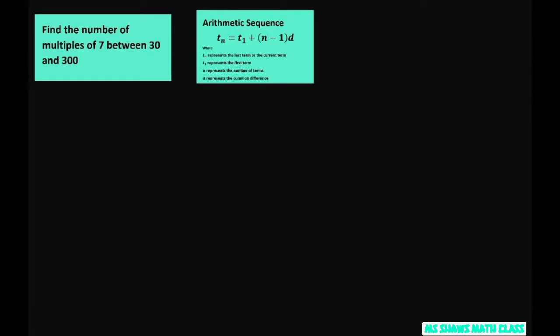We're going to use our formula for arithmetic sequence here, where this term represents either the last term or the current term. This is your first term. N represents the number of terms, and d is your common difference.